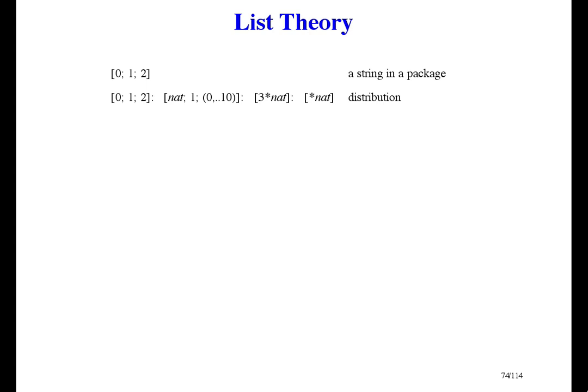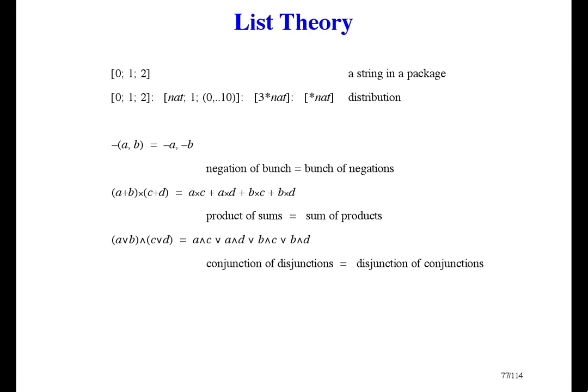It may sound strange to say a list of bunches is a bunch of lists. The math isn't strange. That's just a distribution law. What's strange is the English. A list is a singular noun. And a bunch of lists is plural. But a list with an item that's not an element is not an elementary bunch, even though it is a singular noun in English. To help you see the pattern, let me show you other distribution laws. The negation of a bunch is the same as a bunch of negations. The product of sums is the same as a sum of products. A conjunction of disjunctions is the same as a disjunction of conjunctions. And a list of bunches is the same as a bunch of lists. So that's the pattern.